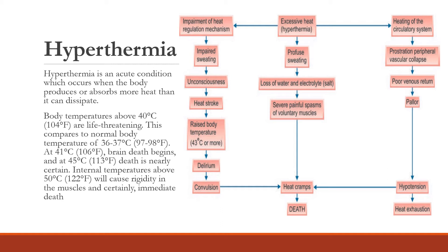Post-mortem findings in hyperthermia include post-mortem caloricity, where body temperature remains high even after death and normal post-mortem cooling is not observed. Eyes show pitting and sinking eyeballs. Rigor mortis sets early and passes off early. Post-mortem putrefaction is rapid. Degeneration of cerebral cortex, cerebellum, and basal ganglia are most common. In hypothermia post-mortem findings, the skin becomes pale, the brain becomes congested, the heart becomes full of blood, and the pancreas shows fat necrosis microscopically.